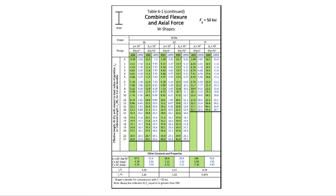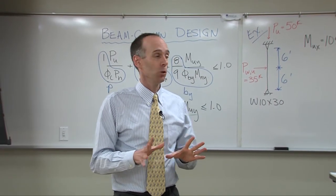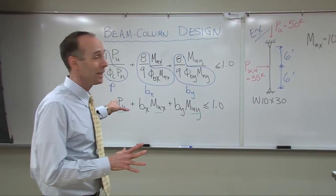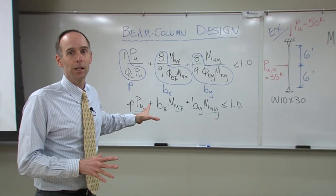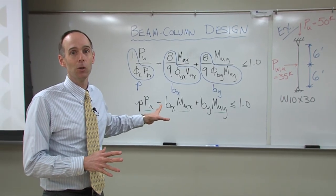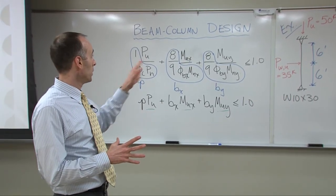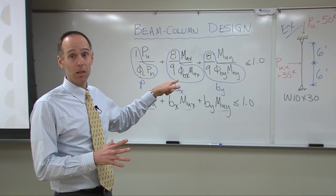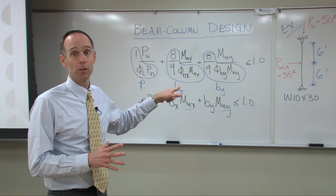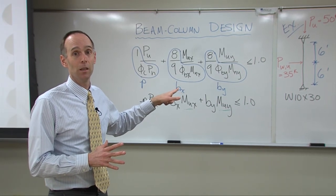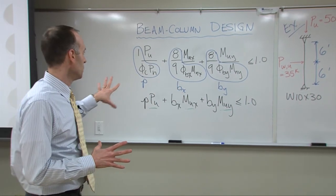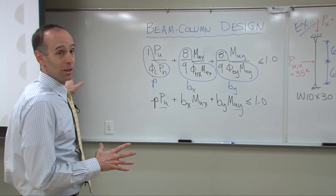You can pull up BX and P from the table. BY is down at the bottom — we'll talk more about that later. This is a very handy table. Using this shortcut, I want to show you how we can determine whether or not the beam-column from that first example we did is okay, just using this approach and the table.